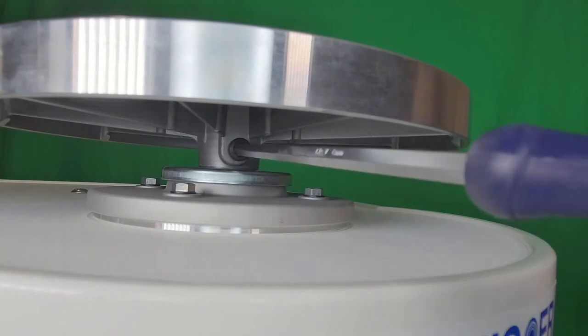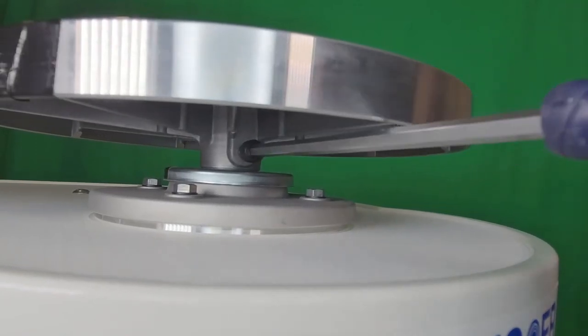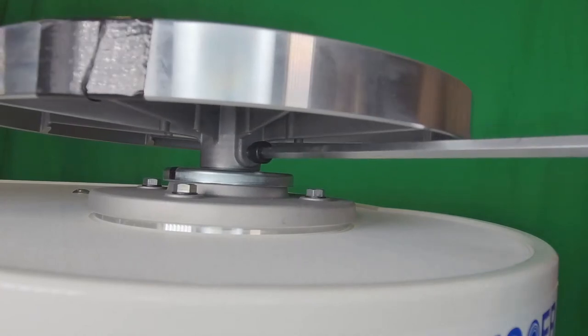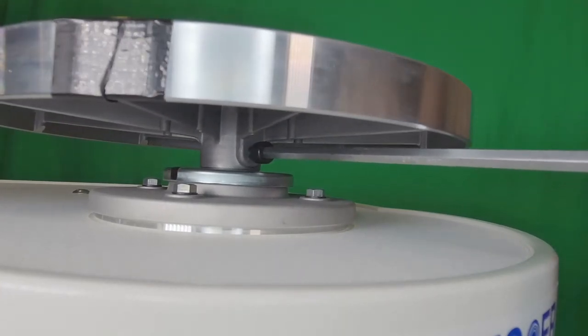Using the T-Wrench, tighten down the set screw. And now your wheel head has been replaced.